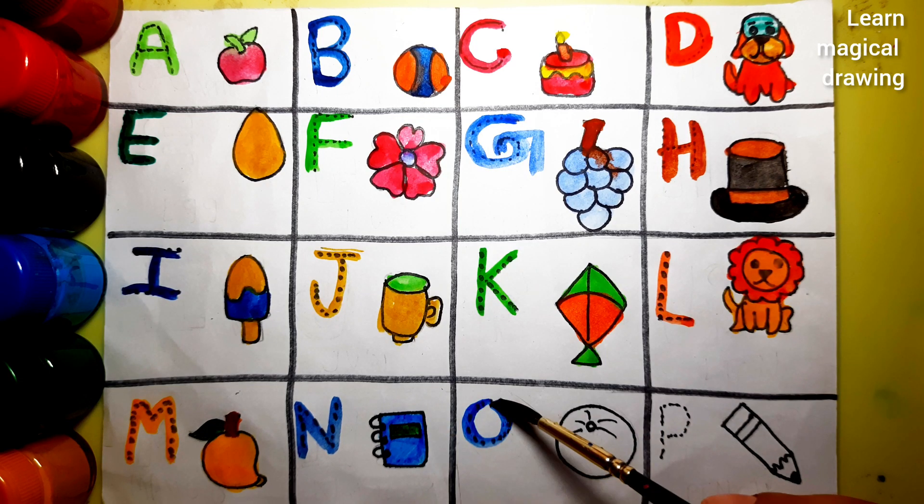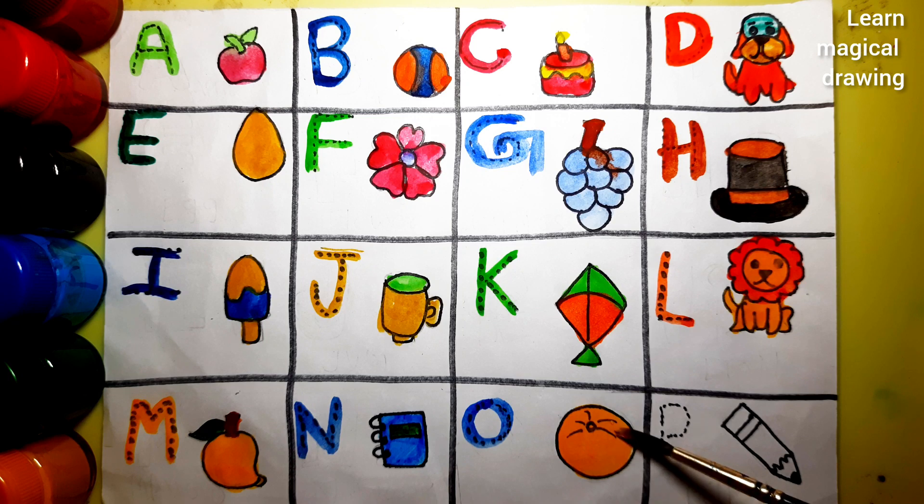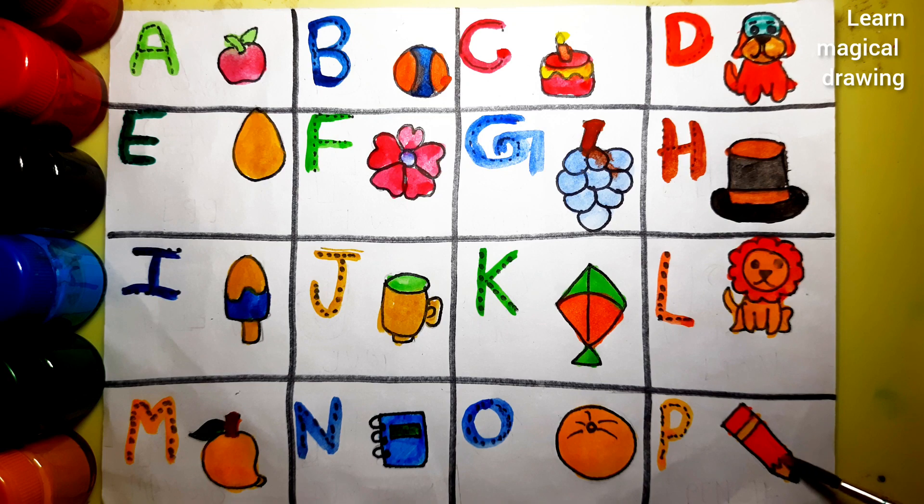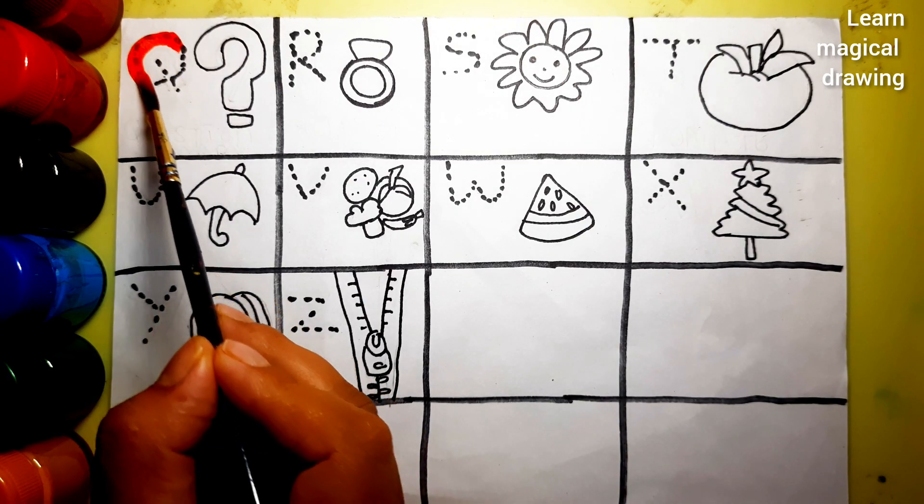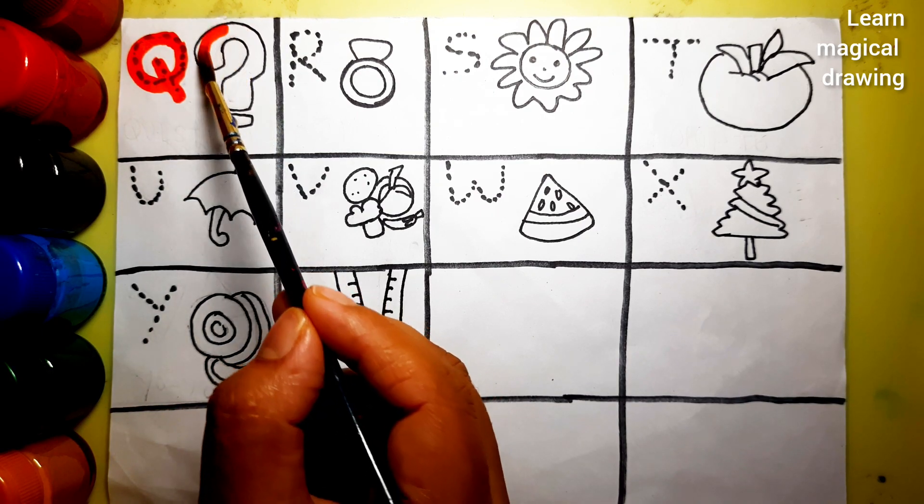O, O for orange. P, P for pencil. Q, Q for question mark.